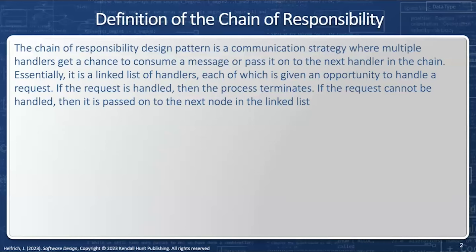The chain of responsibility design pattern is a communication strategy where multiple handlers get a chance to consume a message or pass it on to the next handler in the chain. Essentially, it is a linked list of handlers, each of which is given an opportunity to handle a request. If the request is handled, then the process terminates. If the request cannot be handled, then it's passed to the next node in the linked list.